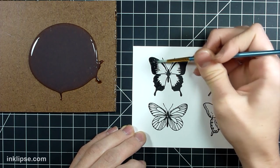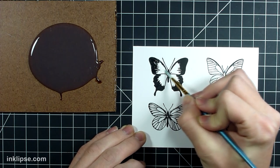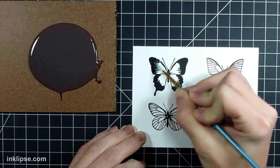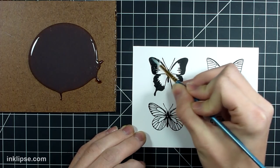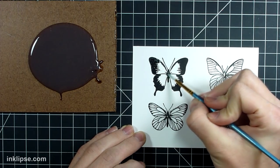Once you have that all covered and it doesn't have to be super perfect or anything and it can go out of the lines just a little bit, you're going to want to give it 10 to 15 to 20 minutes to dry depending on how thick of a coat you made it.